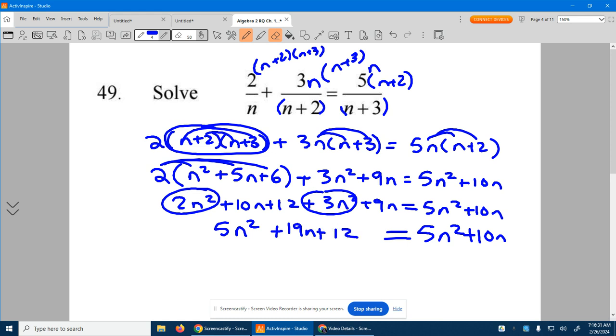Well, if I subtract 5n squared from both sides, what happens? They go away. That's convenient, isn't it? And now, if you want, just move your 19n over. Subtract 19n from both sides. I get 12 is equal to negative 9n divided by negative 9.